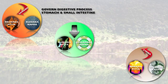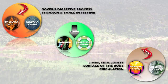Vyanavayu, Brajak Pitta, and Shleshak Kapha relate to the limbs, the skin, the joints, and the surface of the body and are connected to the power of circulation.